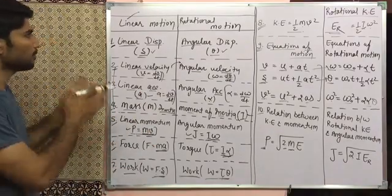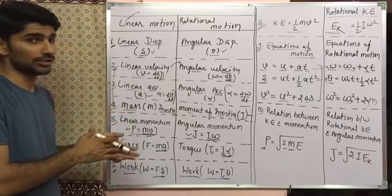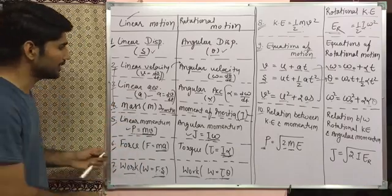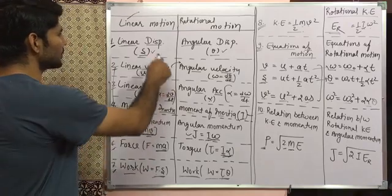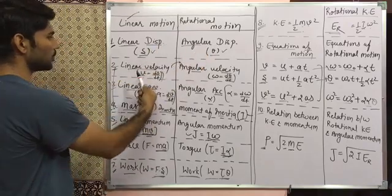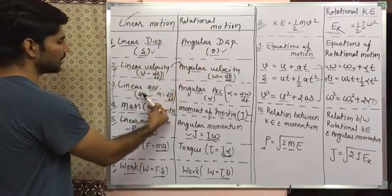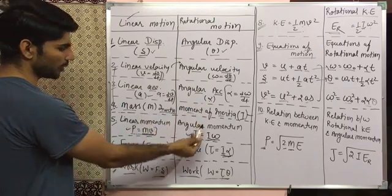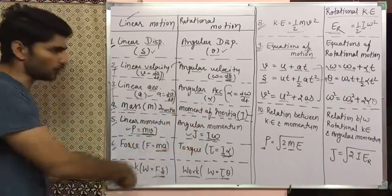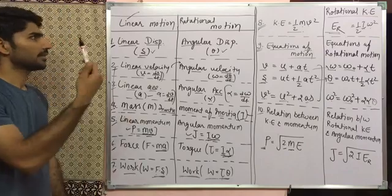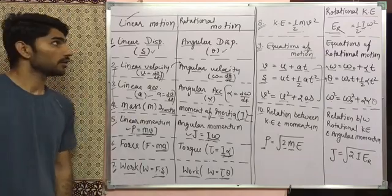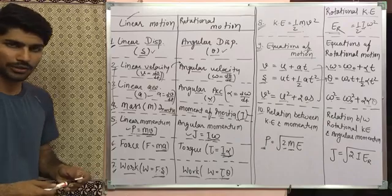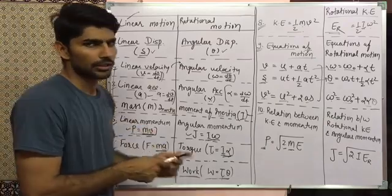So that is how we compare linear motion with rotational motion. Whenever you need a rotational motion formula, just compare it with linear motion and you will get all those formulas. The key things to remember are: linear displacement converts to angular displacement, linear velocity to angular velocity, linear acceleration to angular acceleration, mass to moment of inertia — and after that everything follows similarly.